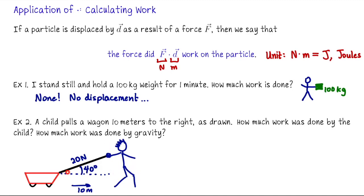We have this child pulling the wagon to the right, exerting a force of twenty newtons at an angle that makes forty degrees with the horizon. Overall the displacement is going to be ten meters. We need to set up a vector dot product representing the force and the displacement.